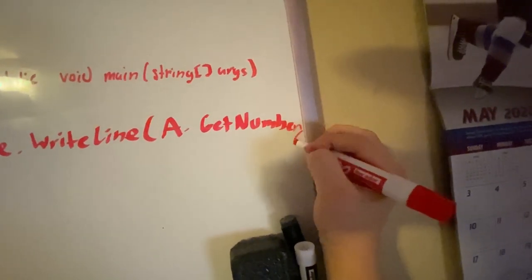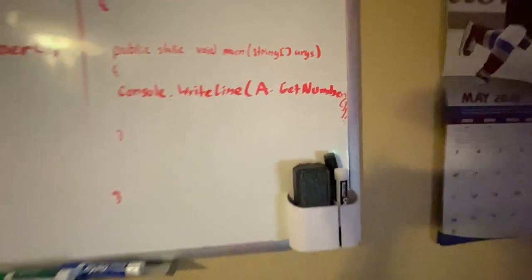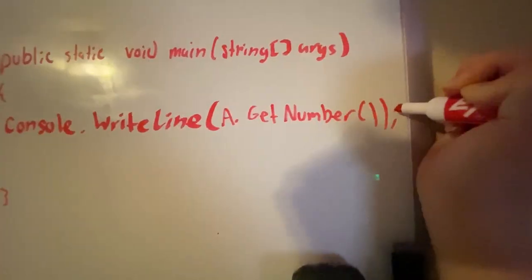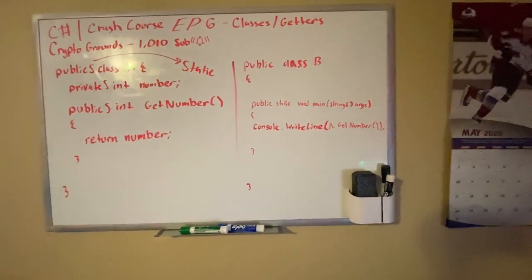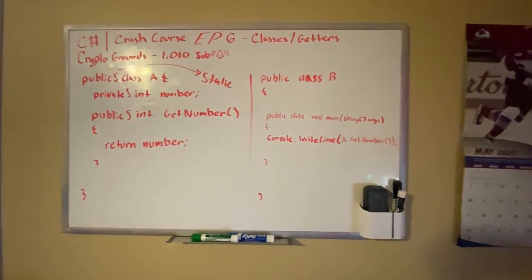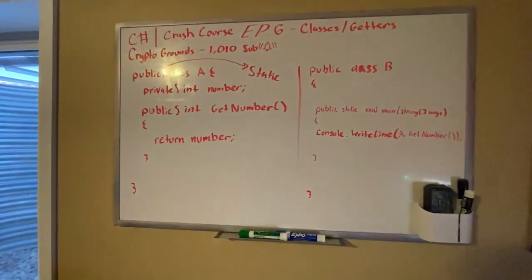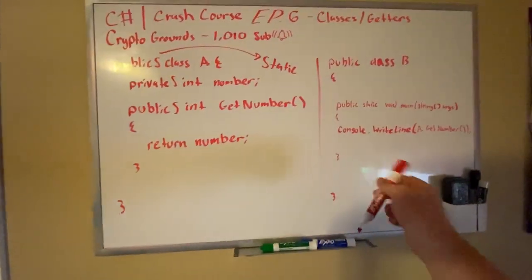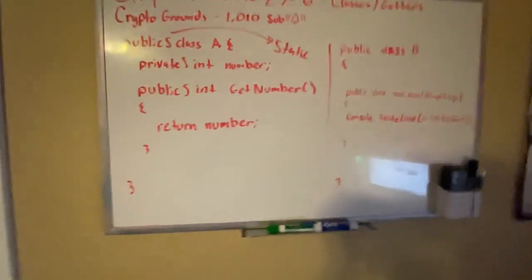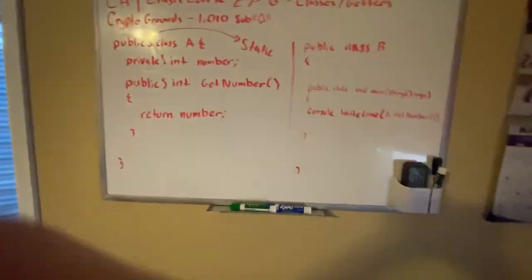Just like that. That is how you use a getter. So basically in summary, it's just a way to access a variable in another class in the most secure way possible.